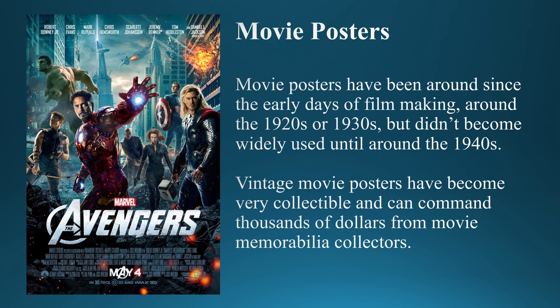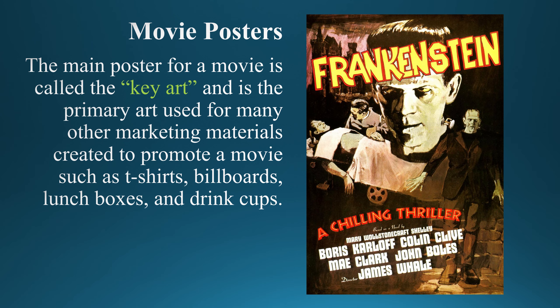Movie posters have been around since the early days of filmmaking, around the 1920s or 1930s, but didn't become widely used until around the 1940s. Up until then, movie posters were placed on easels in movie theater lobbies so moviegoers could see what movies were coming to the theater next. Vintage movie posters have become very collectible and can command thousands of dollars from movie memorabilia collectors. The main poster for a movie is called the key art, and it's the primary art used for making other marketing materials created to promote a movie, such as t-shirts, billboards, lunch boxes, and drink cups. All of the artwork you see on these products are taken directly from the main movie poster, or the key art.